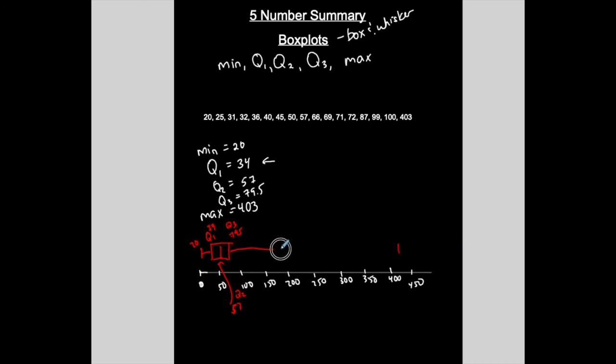And the maximum is my other whisker. So my other whisker for my box and whisker plot goes all the way, this is closer to my maximum which is 403. So this is my box plot for this particular set of data.